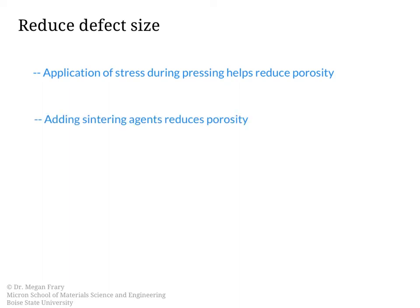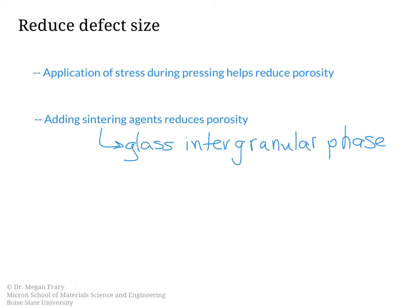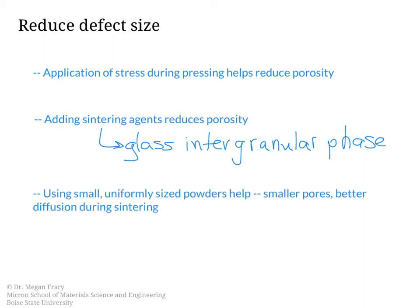Another approach is to add sintering agents to try to reduce the amount of porosity. The downside to this, though, is that it can result in a glassy intergranular phase, and it depends upon the details of that phase as to what it does to the mechanical properties. A third strategy that can reduce the defect size is by using small, uniformly sized powders. This will result in overall smaller pores, and also better diffusion during sintering, since the diffusion path will be shorter if the powder particles are smaller. All of these processing strategies can help to reduce the defect size, which will improve the fracture toughness.